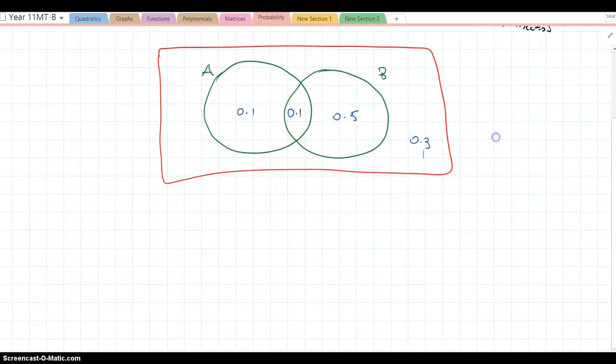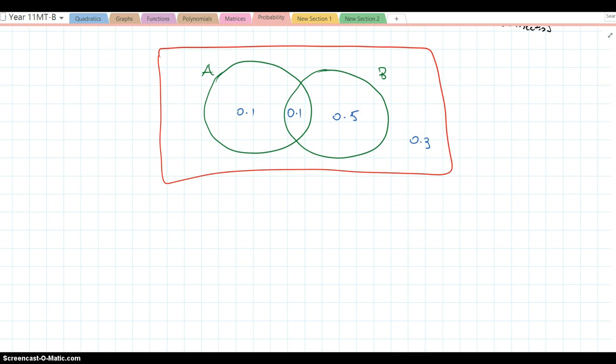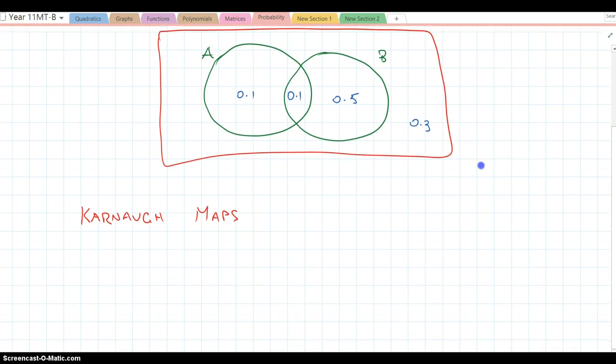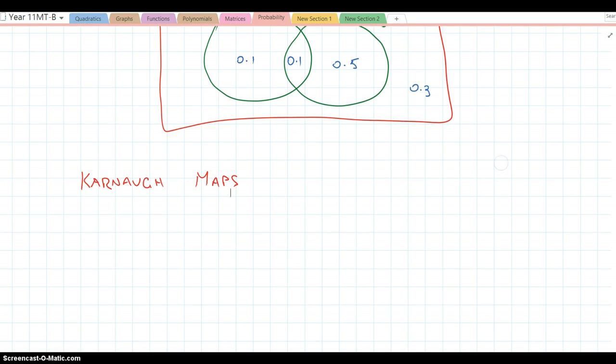So I'm going to put the same information into a Karnaugh map. This Karnaugh fellow, I think it was a physicist actually, and he came up with the idea of putting all this information—rather than maybe using a Venn diagram, maybe it's easier to read in a table, maybe it's easier to get our heads around it. So Karnaugh maps use tables instead of circles or Venn diagrams.